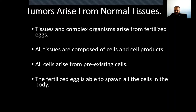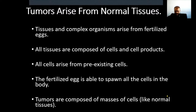The fertilized egg is able to spawn all cells in the body. Tumors are composed of masses of cells, like normal tissues. Applying the cell theory rule — all cells arise from pre-existing cells — if tumors are composed of cells, they must also arise from pre-existing cells. This means cancer cells arise from that person's own normal cells.